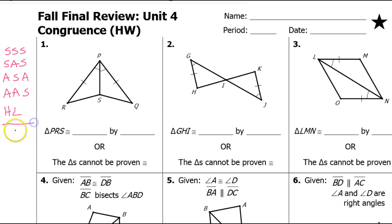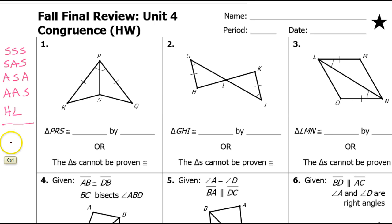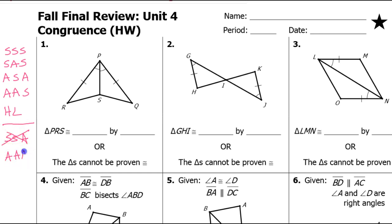Notice that in terms of putting together random combinations of sides and angles, the following two do not work. There is no side-side-angle theorem, so don't try to use that. And there is no angle-angle-angle congruence theorem, so do not try to use that either.